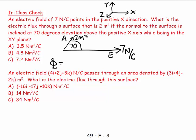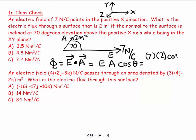My flux equals E dot A, which equals the magnitude of E times the magnitude of A times cosine of the angle between them. That's 7 times 2 times cosine 70, which equals 14 cosine 70. Make sure you're in degrees. That's 4.788.